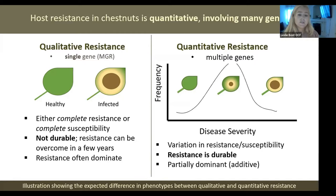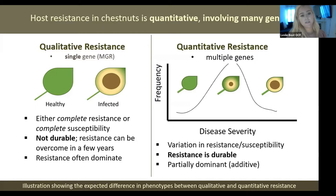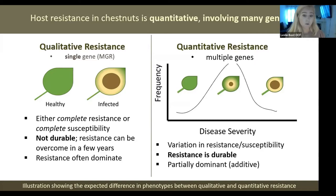The first clue that this was the type of resistance present is the variation in phenotypes. When it's qualitative or major gene resistance, there are only two phenotypes - either healthy or susceptible; the tree is either completely resistant or completely susceptible. With qualitative resistance it's not durable - that resistance can be gone in one generation. But with quantitative resistance, the resistance is actually durable and it's partially dominant, so it's additive.